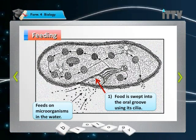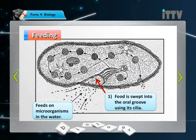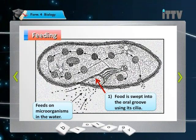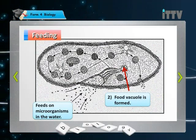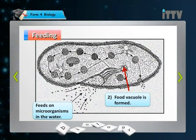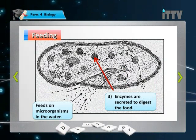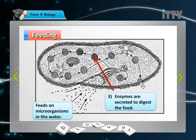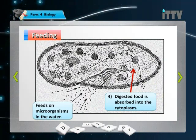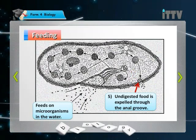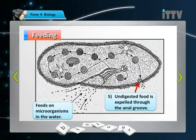Looking at the feeding diagram, we start from the oral groove. You can see that food molecules or microorganisms in the water are carried towards the oral groove. As the food is swept by the cilia into the oral groove, a food vacuole is formed at the end of the oral groove. This food vacuole is then digested by secreted enzymes, the digested food is absorbed into the cytoplasm, and undigested food is expelled through the anal pore on the plasma membrane.